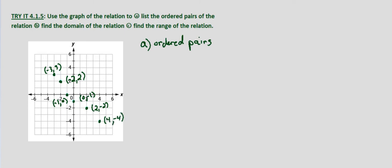So listing the ordered pairs of the relation, we'll just write them out in set notation. And now it's simply a matter of copying what we already have listed. We'll go from left to right. So negative 3, 3. Negative 2, 2. Negative 1, 0. 0, negative 1. 2, negative 2. And finally 4, negative 4.